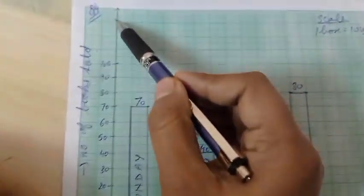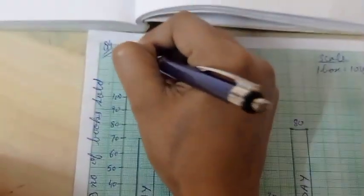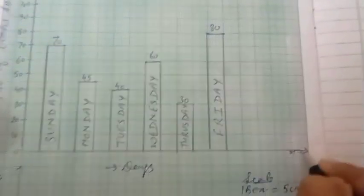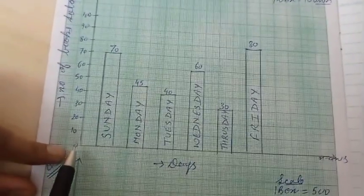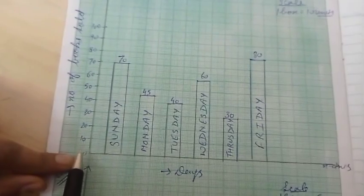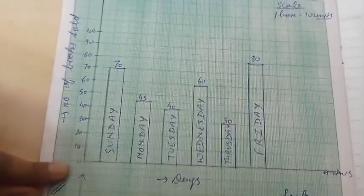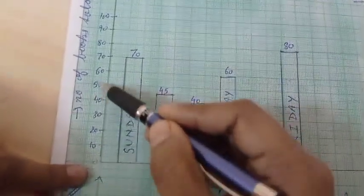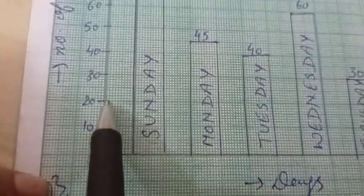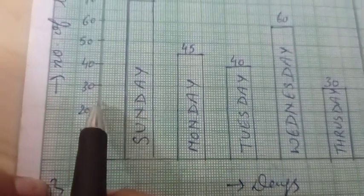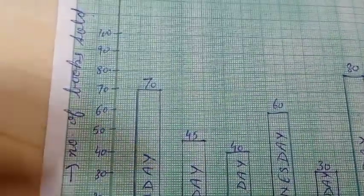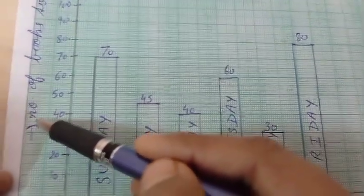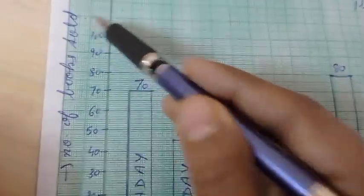First, draw the y-axis and the x-axis on the dark line. In the table the highest observation is 80, so I took a gap of 10. Starting from zero: 10, 20, 30 — mark on the dark lines only — 40, 50, 60, 70, 80, and two more divisions after 80. Write 'Number of Books Sold' on this side.